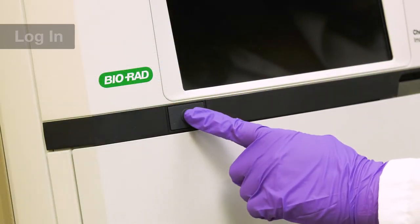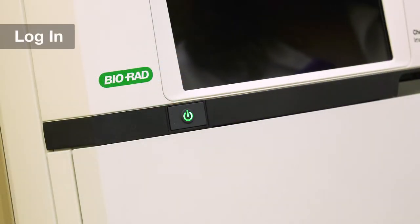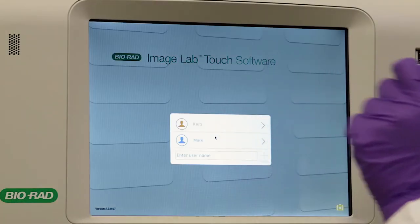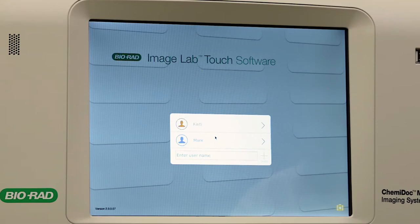To turn on your Chemidoc, simply push the green button in front of your instrument. When the customizable home screen appears, tap anywhere and your login menu will appear.